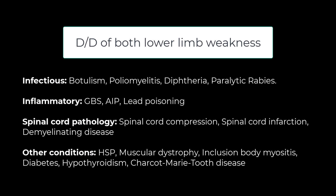Inclusion body myositis can be a cause but it also causes pain. Diabetes causes peripheral neuropathy — it primarily damages sensory nerves but in the long term can damage motor nerves as well, causing both lower limb weakness, though these patients usually give a long history. Hypothyroidism should also be kept in mind, and Charcot-Marie-Tooth syndrome can cause both lower limb weakness plus deformities like high arched feet and inverted champagne bottle deformity.